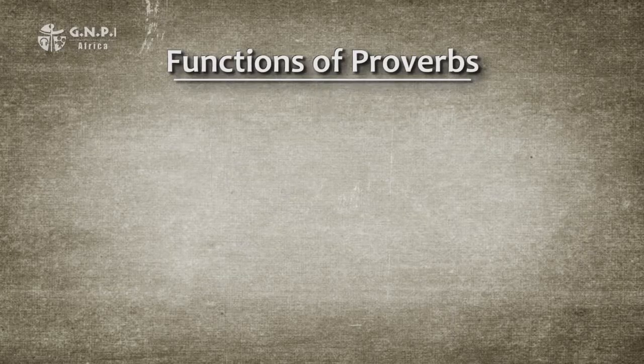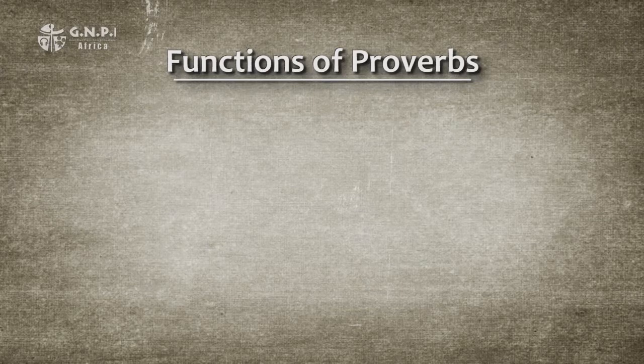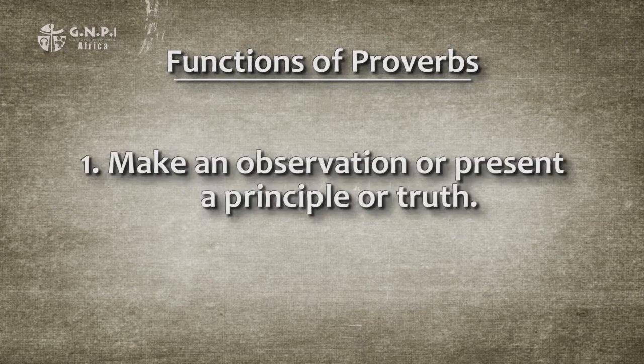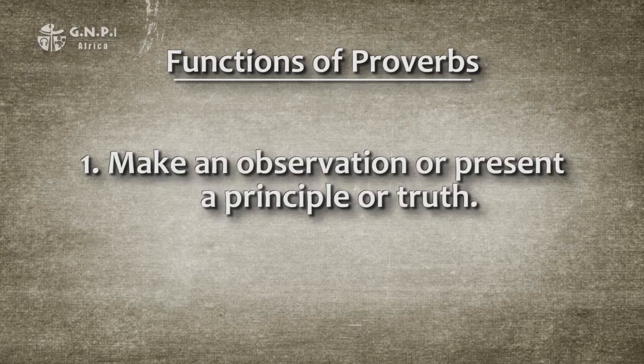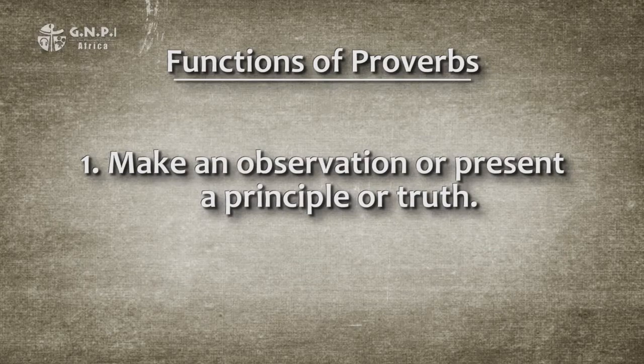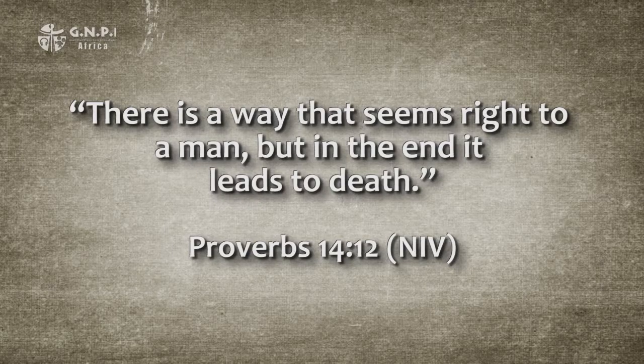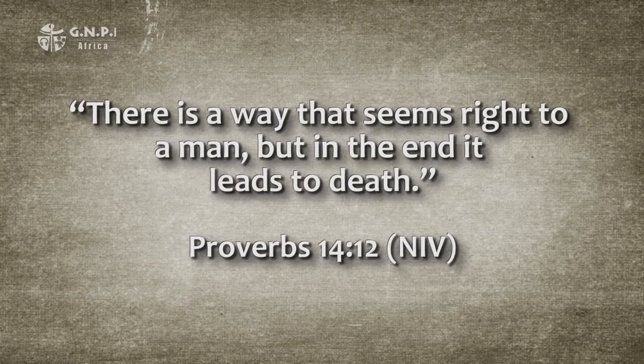Though not comprehensive by any means, let's briefly identify four functions of a proverb. The first function is to make an observation or present a principle or truth for consideration and understanding. For example, listen to the proverb in chapter 14 verse 12: 'There is a way that seems right to a man, but in the end it leads to death.' The student of wisdom literature is supposed to read this proverb and identify and internalize the truth explained in the proverb.